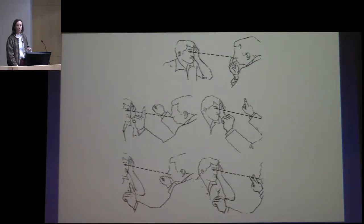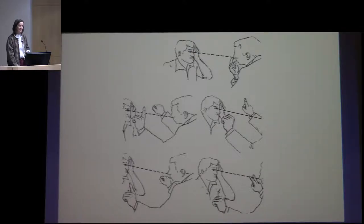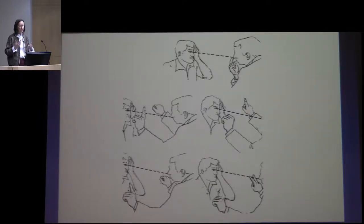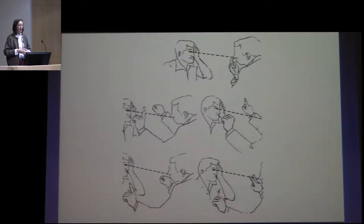The most common way of testing the field of vision is confrontation fields — I prefer 'confrontation' rather than 'confrontational.' Here you line yourself up with the patient's eye. When you're doing count-fingers vision, you don't really need to have it carefully aligned — you can have them look at your nose, keep your eyes open, and that gives you both hands free.